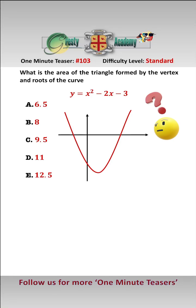So we need to find the triangle area which is formed from the vertex and the two roots. It is basically this triangle here, and to do that what we need to do is first of all find the vertex.